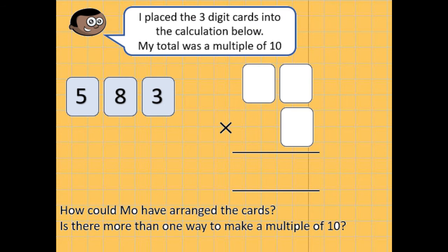Okay, some problem solving. This one is quite challenging. So I placed 3 digit cards into the calculation below. My total was a multiple of 10. So we've got the 3 digit cards, which is 5, 8 and 3. And a multiple of 10 means that the answer has to be in the 10 times table. So we know that numbers ending in 0 are in the 10 times table. How could Mo arrange the cards? Is there more than one way of doing it? Pause, give it a go, and then come back when you're ready for the answer. Right, so you could have had 38 times 5, and that would give you 190. Well done if you found that one. Extra points if you found another way as well.